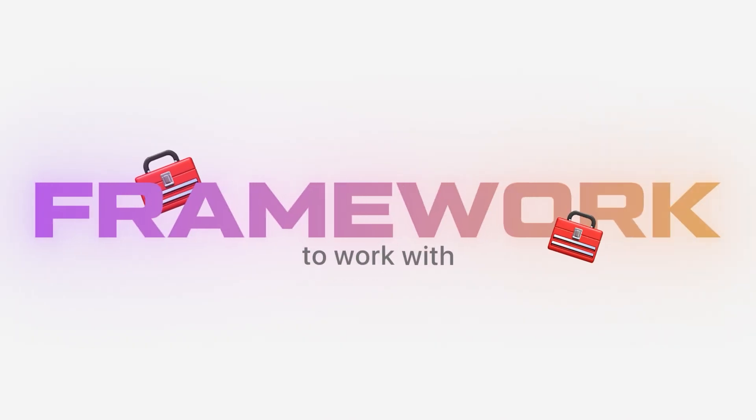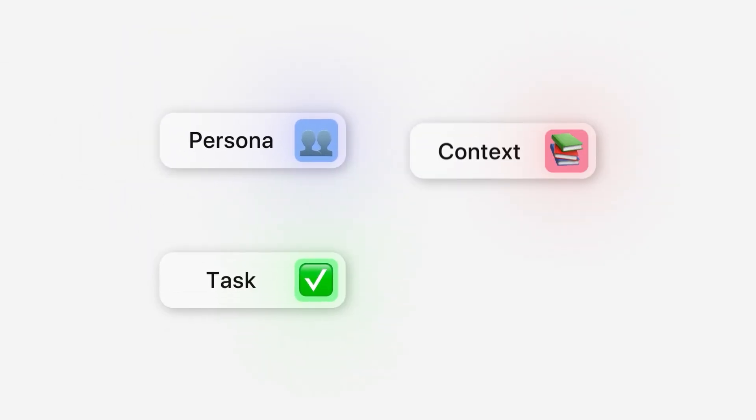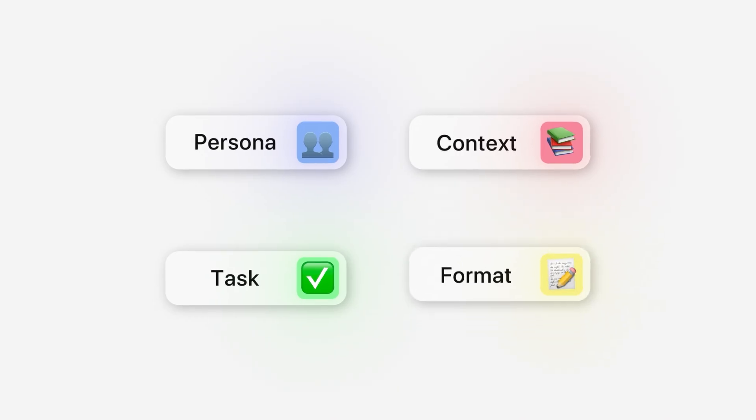To get started with engineering prompts, it's always good to have a framework to work with. Google states that there are four main areas to consider when writing an effective prompt: first, the persona; then the task; context; and then format.